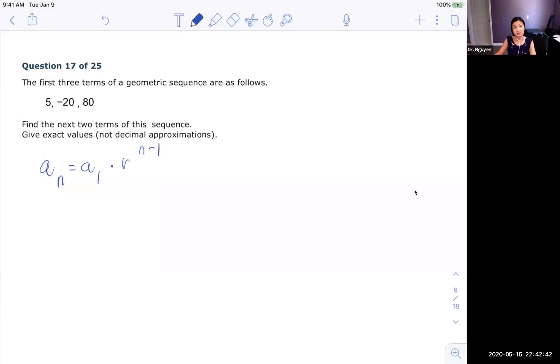Hi class. For this video, we're going to talk about geometric sequences. The big difference between geometric sequence and arithmetic is for arithmetic, we have a common difference. For geometric, we have common ratio. So to find the next number in geometric sequence, you multiply instead of adding.